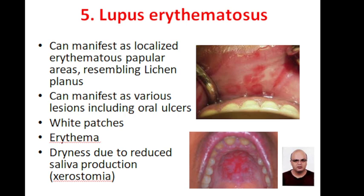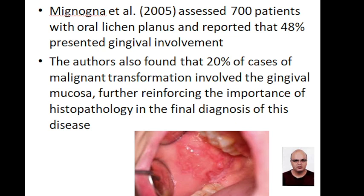Lupus erythematosus can manifest as localized erythematous papular areas resembling lichen planus. It can manifest as various lesions including oral ulcers and white patches. Sometimes erythema is seen which is accompanied by dryness due to xerostomia.